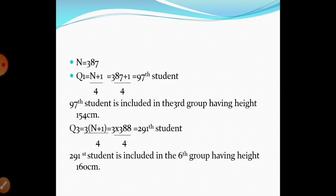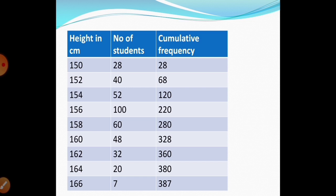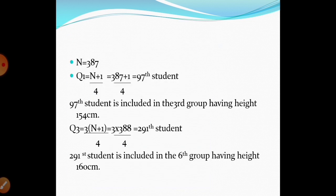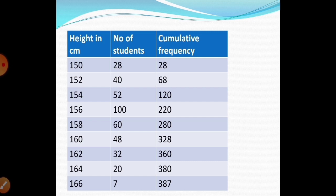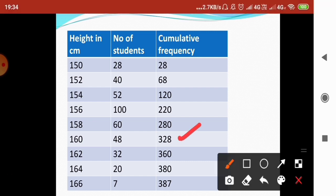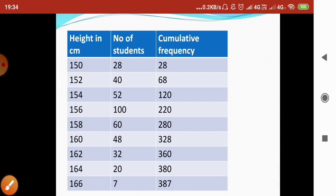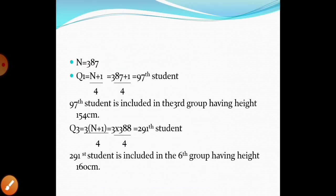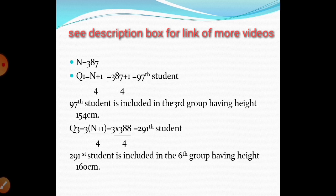For Q3, we use the formula 3×(n+1) divided by 4, which gives the 291st student. Looking at the cumulative frequencies, 291 falls in the sixth group, where the height is 160 cm. So the height of the 291st student is included in the sixth group, and Q3 is 160 cm.